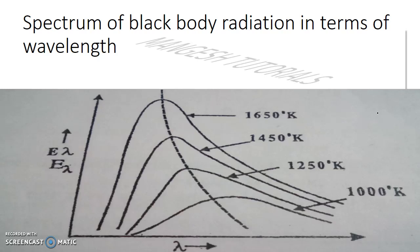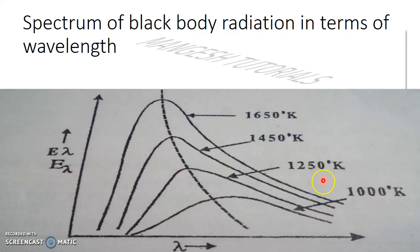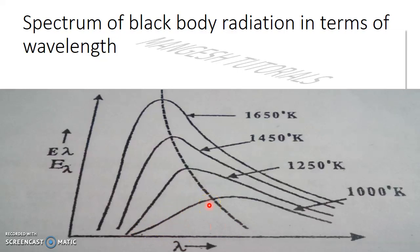From these curves, several results were obtained. First, at any given temperature — for example 1000 K — the energy is not uniformly distributed among all wavelengths. As lambda changes, E-lambda also changes; it is not a straight line but a curve.